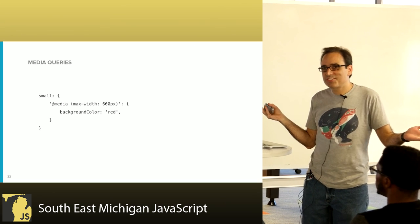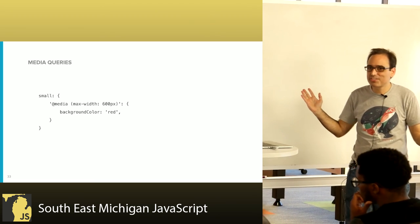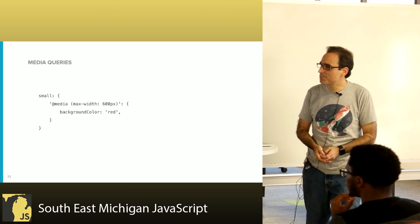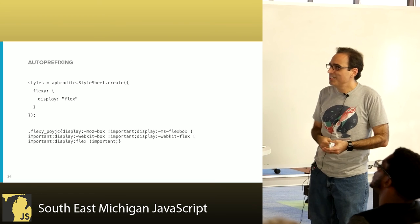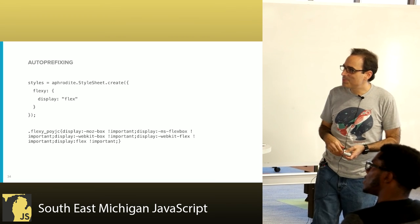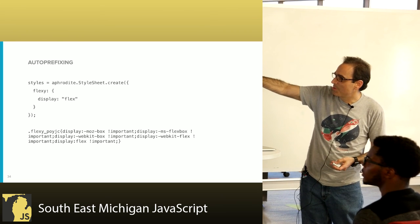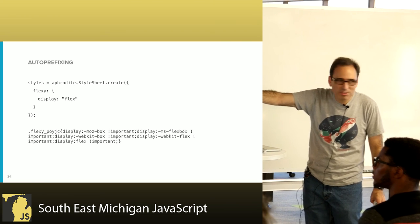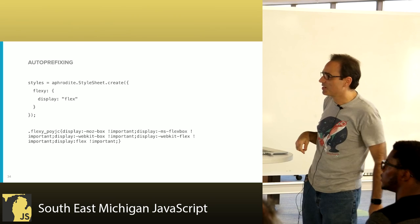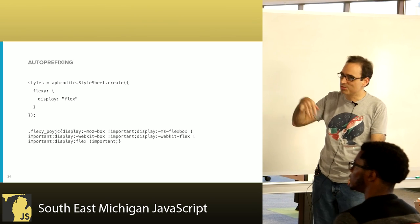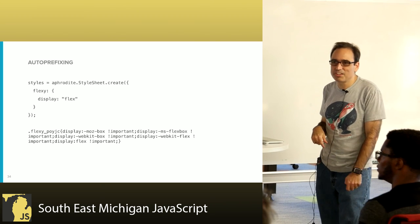Just as with pseudo classes, you can do media queries because it's just normal CSS — they work pretty much exactly like you'd expect. Since we're generating the stylesheet, we might as well do some useful stuff for you. In the case of Flexbox, if you write 'display: flex', Aphrodite generates the prefixes for all the browsers and older browsers that might still be using prefixes. Since we're generating a style sheet, we do that for you automatically.